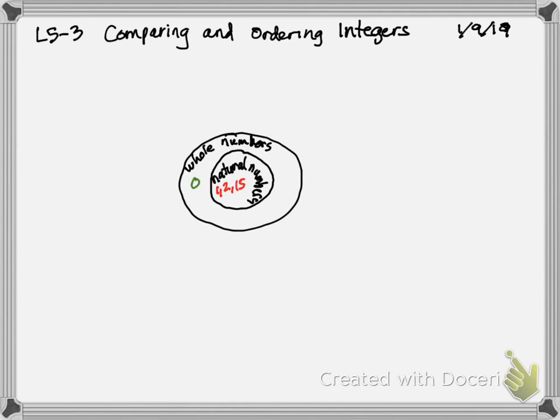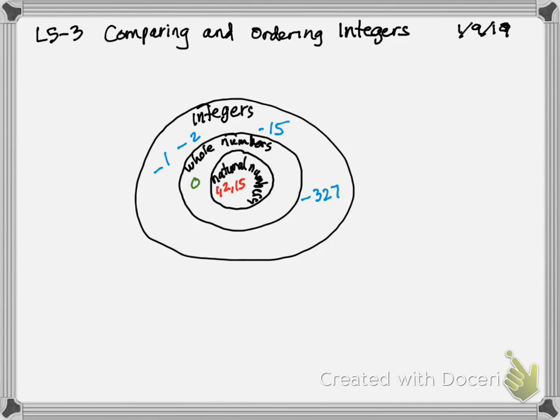Now the only thing that's in whole numbers that's not in natural numbers is our friend neutral zero. All whole numbers include all natural numbers so that's why we're having these circles that nest. So each circle that gets bigger contains all the numbers in the circles inside of it. Then the guy that we talked about on Monday, those are your integers.